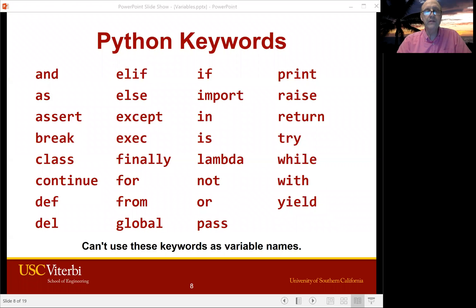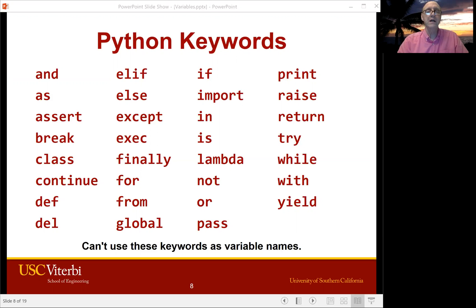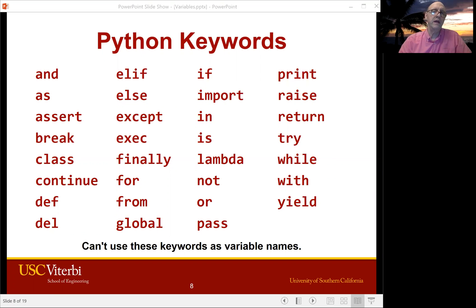One more thing about names: you cannot name any of your variables using these words — these are the reserved keywords of Python. We haven't seen any of them yet, but we will. There aren't a lot of words here when you think about a language — this is the entire vocabulary of Python except for words you make up. Pretty compact. So for example, you're not allowed to name a variable 'if', because Python treats it as having special meaning. All of these reserved words have special meaning.